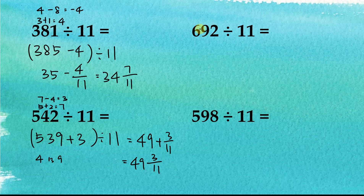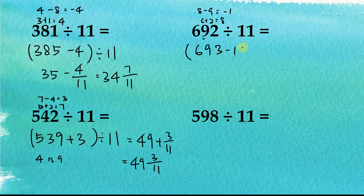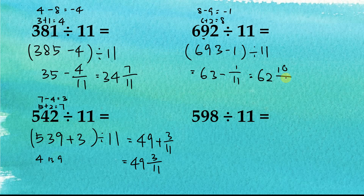Next example: the sum of the odd digits — 6 plus 2 — equals 8. And 8 minus the even digit 9 equals negative 1. To make this divisible by 11, we change it to 693, then subtract 1, so it's (693 minus 1) divided by 11. And 693 divided by 11 equals 63, because 6 plus 3 equals 9. Therefore the answer is 62 and 10 over 11.